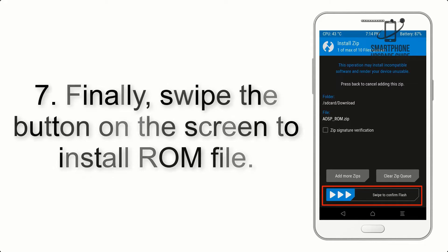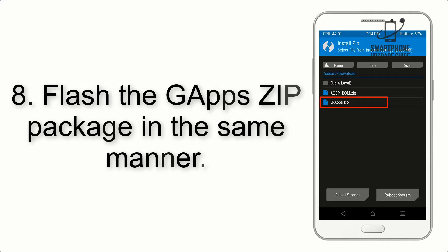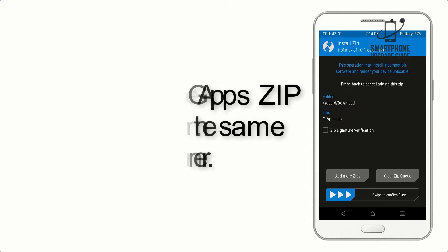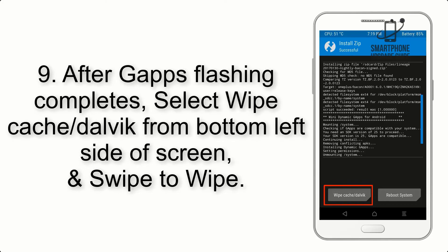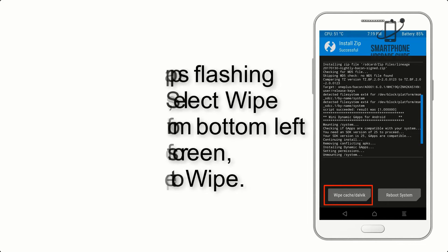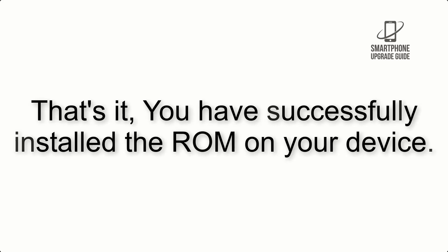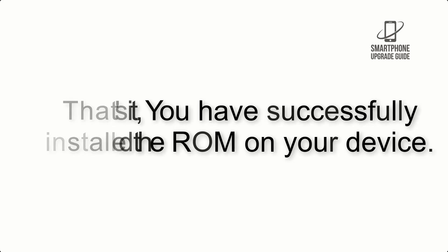Step 7: Swipe the button on the screen to install the ROM file. Step 8: Flash the GApps zip package in the same manner. Step 9: After GApps flashing completes, select Wipe Cache and Dalvik from the bottom-left side of the screen and swipe to wipe. Step 10: When the flashing process is complete, hit Reboot System. That's it — you have successfully installed the ROM on your device.